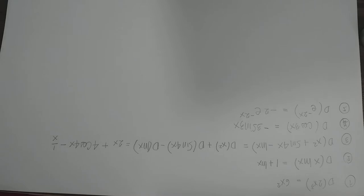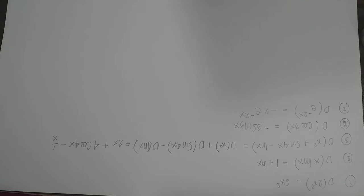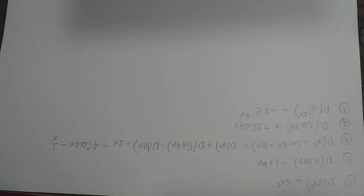We generalize the definition of the operator D by writing D raised to r to indicate the r-th derivative relative to the independent variable. That is, D^r = d^r/dx^r, where r can range from 0 to infinity.